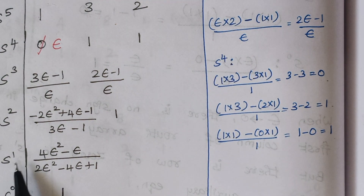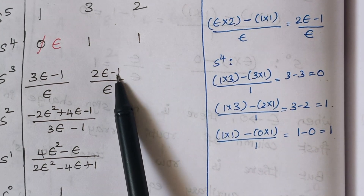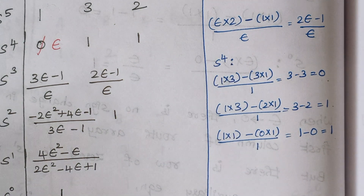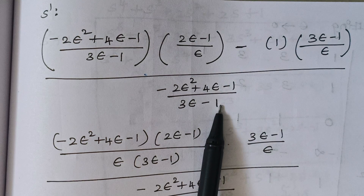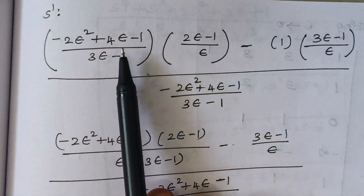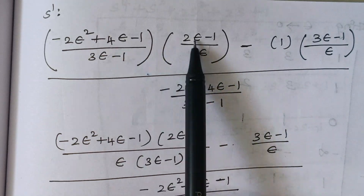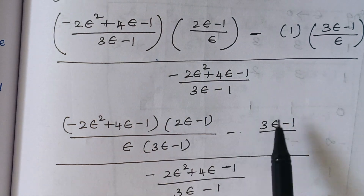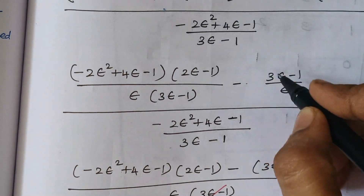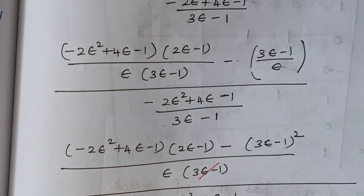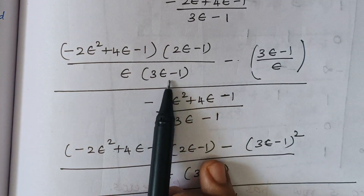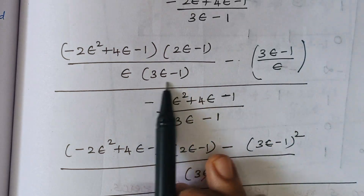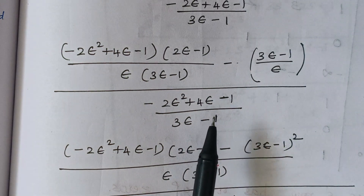The next step is finding the s^1 row. This term gets multiplied with that term, minus 1 multiplied with the other term. The expression is quite large so it is written on a new page. We combine terms in the numerator over the denominator, and take LCM since we have (ε − 1) in one place and ε alone in another — multiplying numerator and denominator by (3ε − 1).